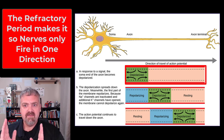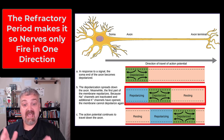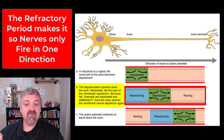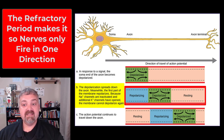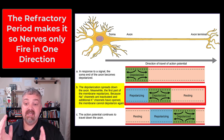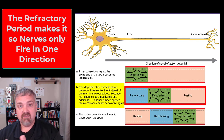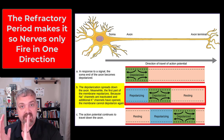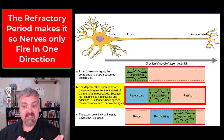So that first section of this neuron has been depolarized, and then it's going to be repolarized and hyperpolarized as the depolarization spreads. The depolarization spreads down the axon. Meanwhile, the first part of the membrane repolarizes, because sodium channels are inactivated and additional potassium channels have opened, the membrane cannot depolarize again. So while that second section of the neuron is depolarizing, sending sodium in both directions, it's only going to actually depolarize that one section forward, and it's not going to depolarize the section behind it.